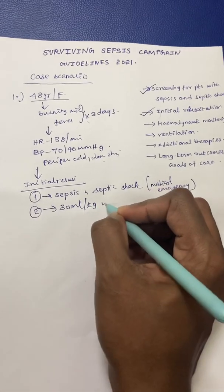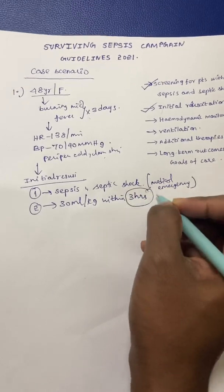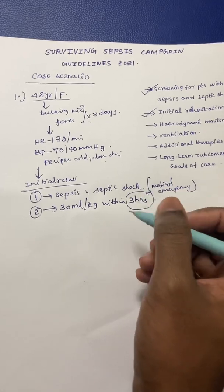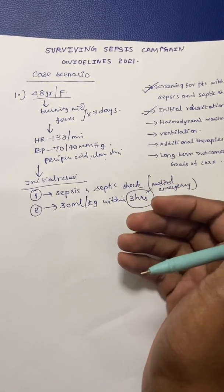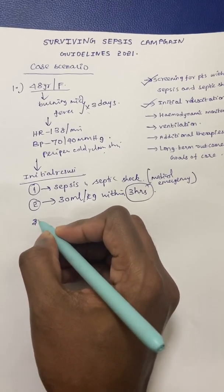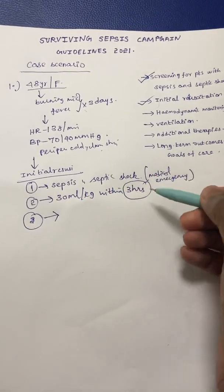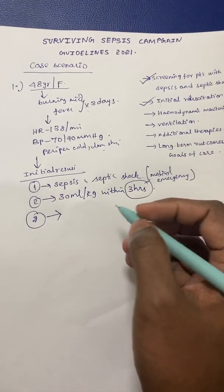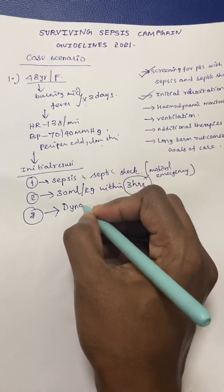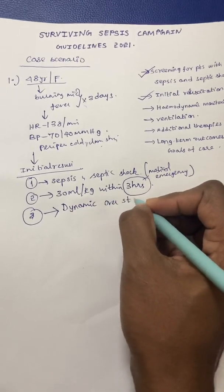This fluid should be administered within the first three hours. This is a weak recommendation with moderate quality of evidence. After giving fluid, you observe whether BP is improving. For assessing BP response, you should monitor dynamic parameters over static parameters.